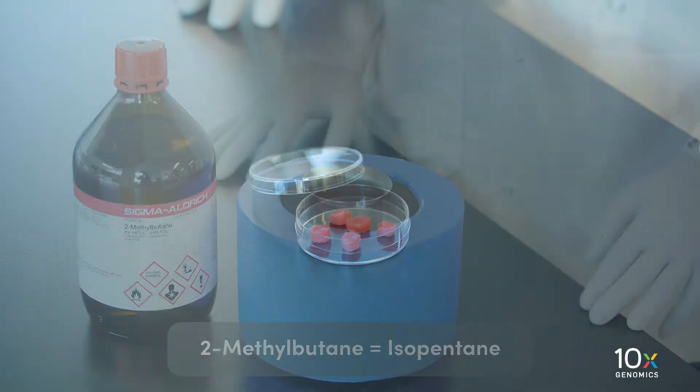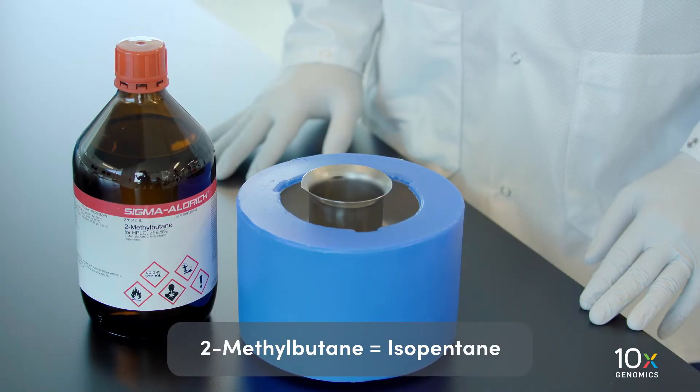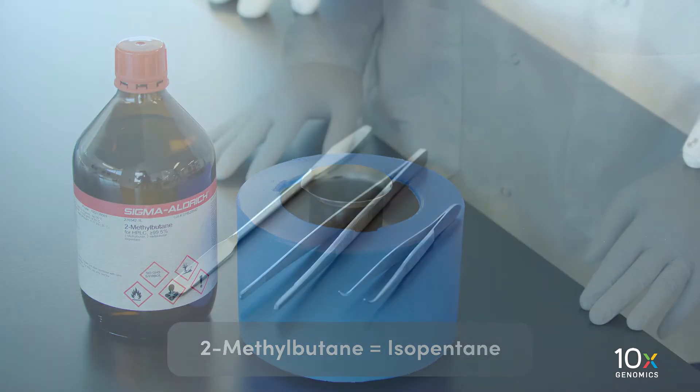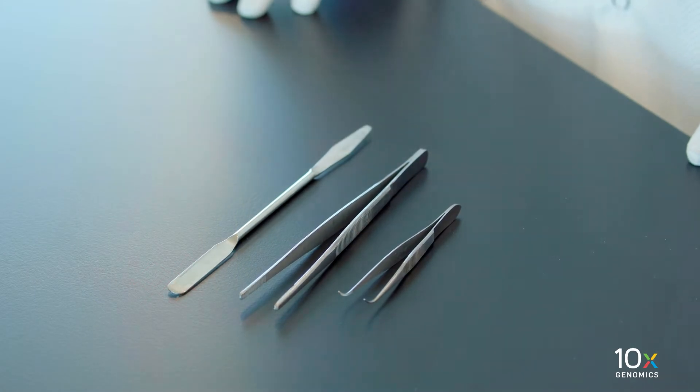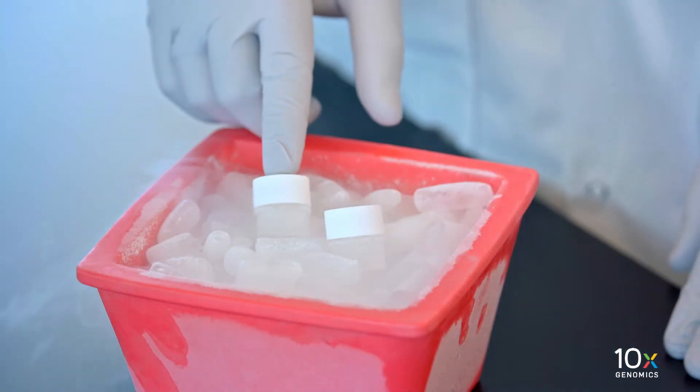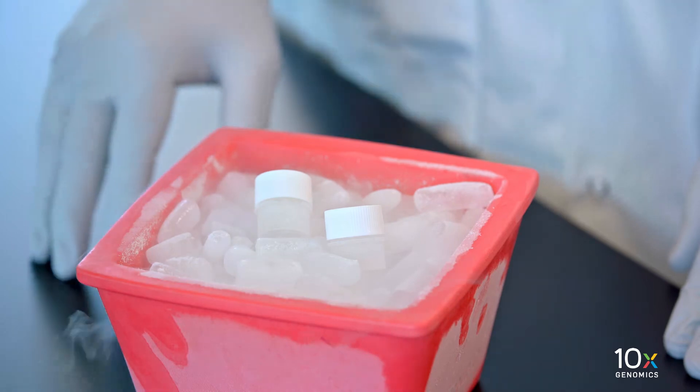We are ready to snap freeze our fresh tissue sample. We have the fresh tissue, materials to make an isopentane and liquid nitrogen bath, a forcep or spatula, a pre-cooled Wheaton cryo elite cryovial, and dry ice.